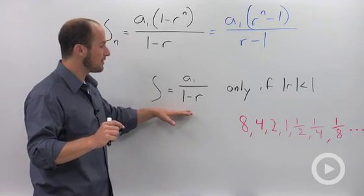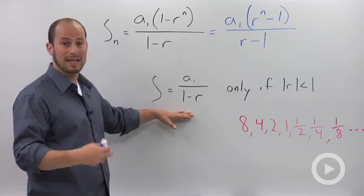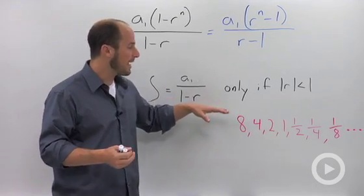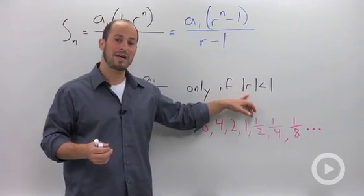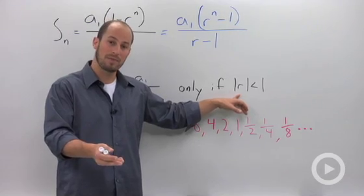There is one restriction, though, that we have to have when we are summing an infinite series. And that is that our absolute value of our rate has to be less than 1.